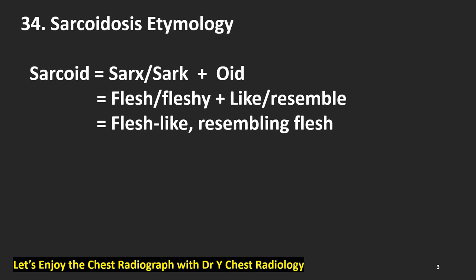The etymology of sarcoidosis: the word sarcoidosis comes from sarcoid — 'sarc' is from Greek meaning flesh, and 'oid' means like or resembling. So the resulting meaning is flesh-like, resembling flesh.